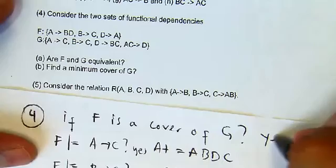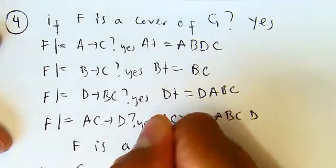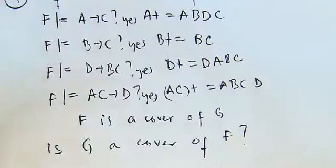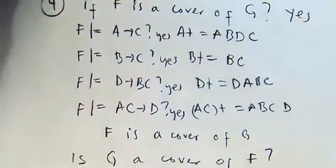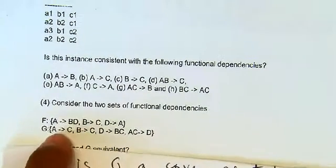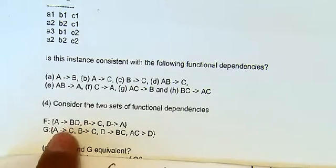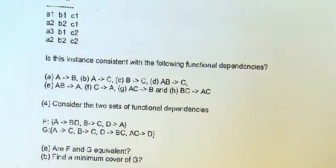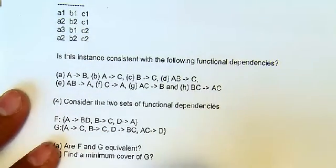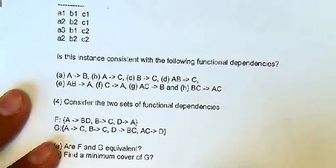Now we need to check if G is a cover of F. If the answer is also yes, then F and G are equivalent. We check if all functional dependencies from F can be derived from G. F has three functional dependencies, so we check if G can logically imply A→BD.